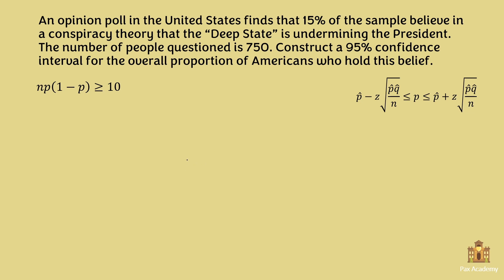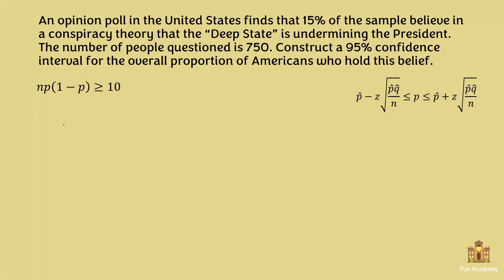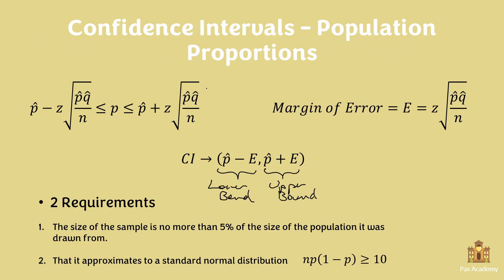The first thing to do is check whether they meet the first requirement — that the size of the sample is no more than 5% of the size of the population it was drawn from. Here we have 750 people questioned in the US, which is clearly much, much less than 5% of the whole population of the United States. So it meets the first requirement.